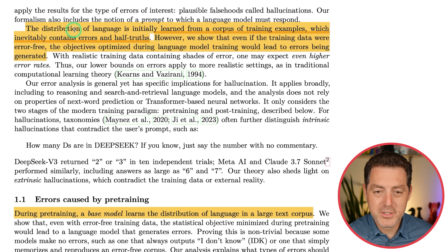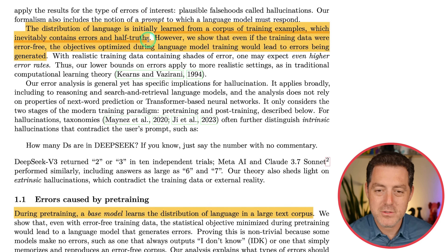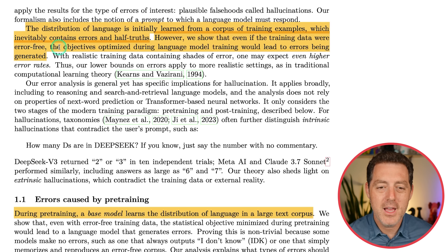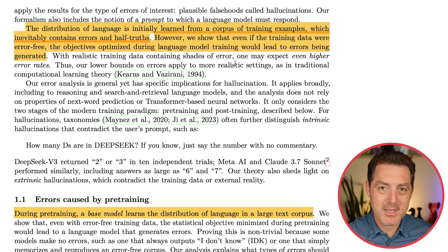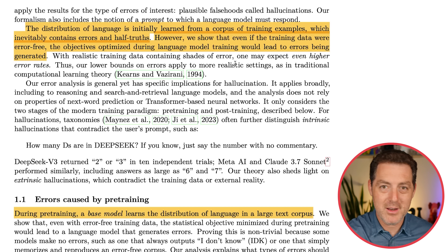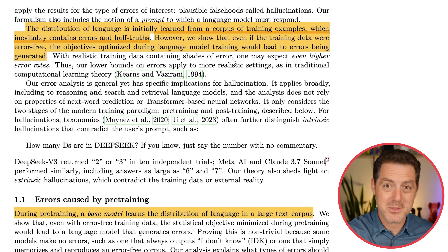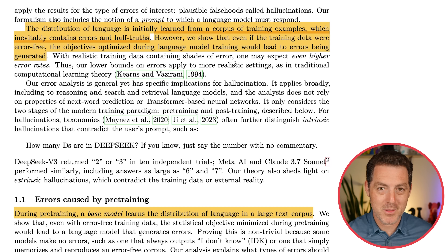According to the paper, the distribution of language is initially learned from a corpus of training examples which inevitably contain errors and half-truths. However, even if the training data were error-free, the objectives optimized during language model training would lead to errors being generated. The key phrase is 'objectives optimized' — meaning how the model is being told whether it's getting something right or wrong. That's where the hallucinations come from.